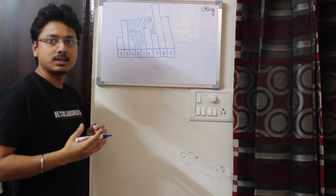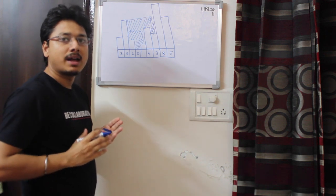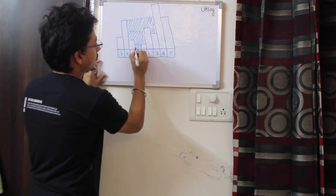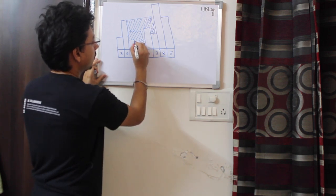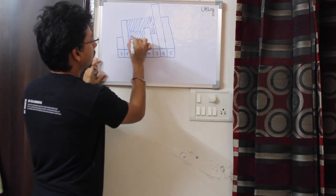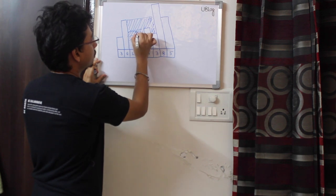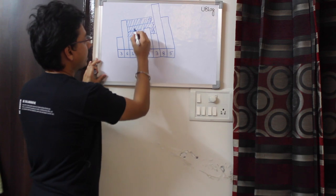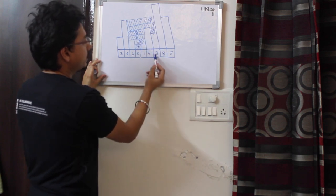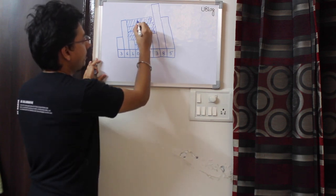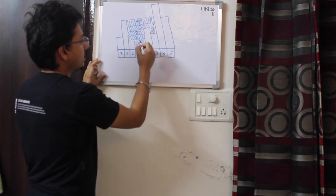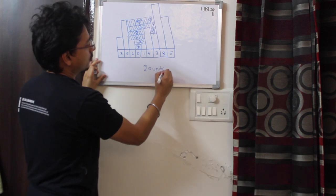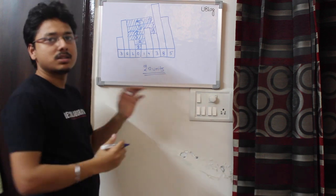I need to return the answer in units. I can store 1 unit here, 2 units here, 3 units here, 3 units here, 1 unit here, and then 5 units here and 5 units here. So in total I'll be storing 20 units of water. That is the answer.